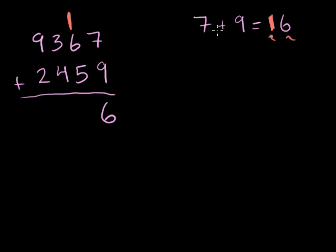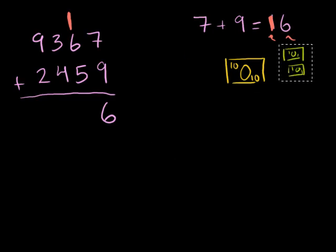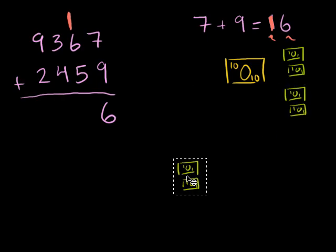If you view this as money, what's the best way to get $16 in a world where there weren't $5 bills, where you only had $1 bills, $10 bills, $100 bills, and so on. Only multiples of 10. And we don't have any $5 bills. In that world, you would represent 16 as one $10 bill, just like that. And then six $1 bills. So that's two more $1 bills, and then that's two more $1 bills.